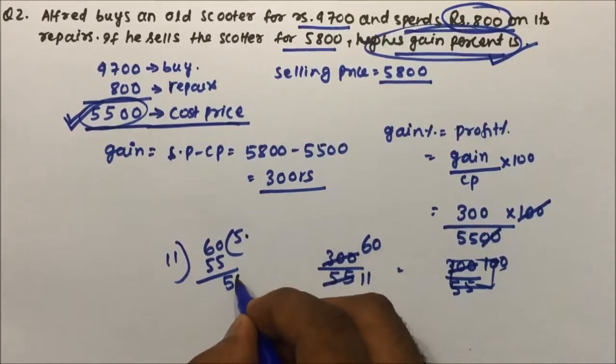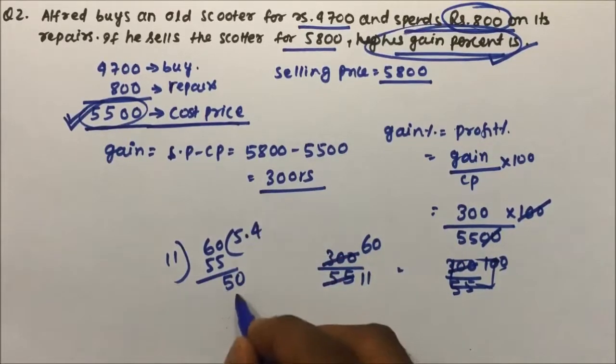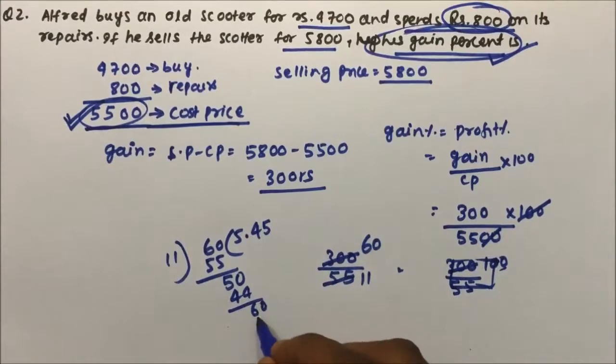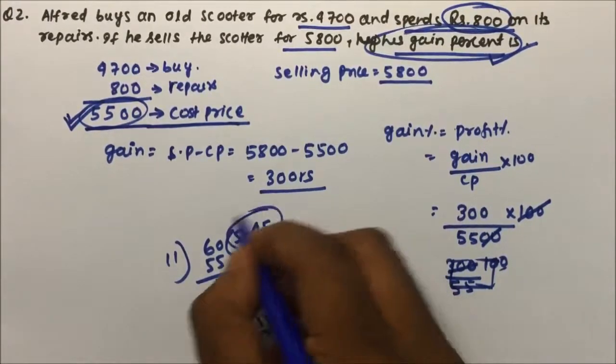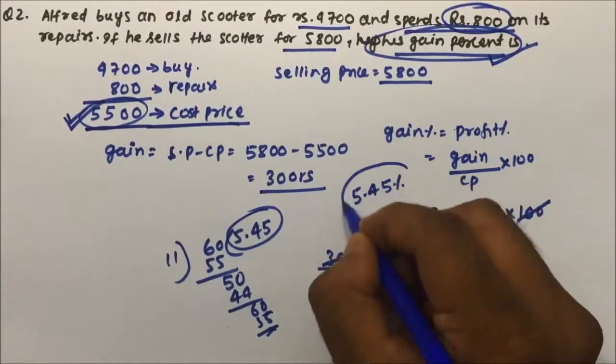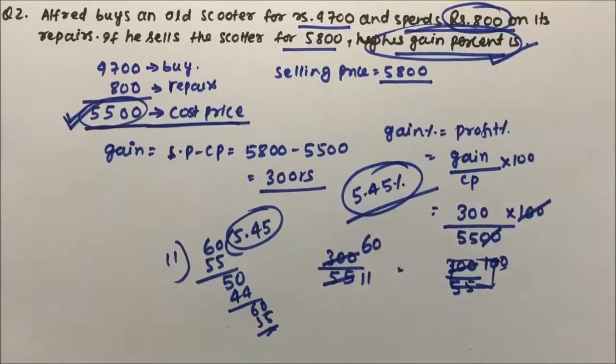So 60 if you divide it by 11, 5 times 55, 5 will come, 10 minus 5 is 5, and then 10 will come, 11 into 4 is 44, 6, and then again 11, 5 is 55. So my answer will be around 5.45 percentage profit. So Alfred will have a profit of 5.45 percent. Thanks for watching the video.